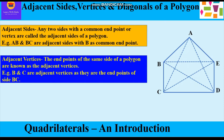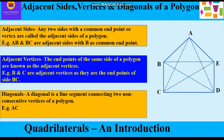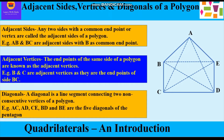Now, diagonals: a diagonal is a line segment connecting two non-consecutive vertices of a polygon. For example, AC, AD, CE, BD and BE are the five diagonals of the pentagon. AC, AD, CE, and BD all connect non-consecutive vertices, and a line segment joining these vertices is called a diagonal.